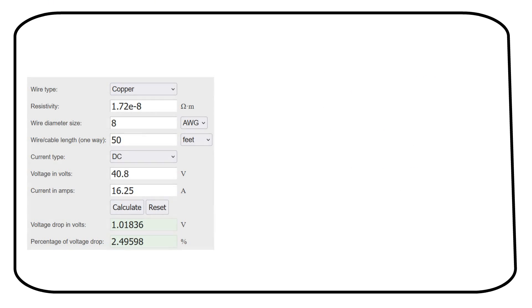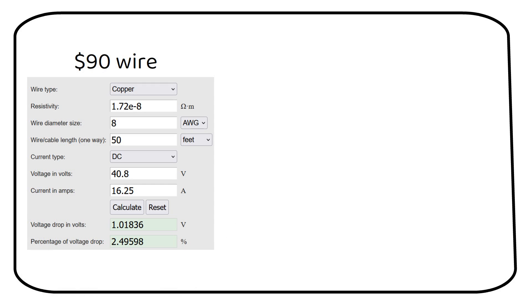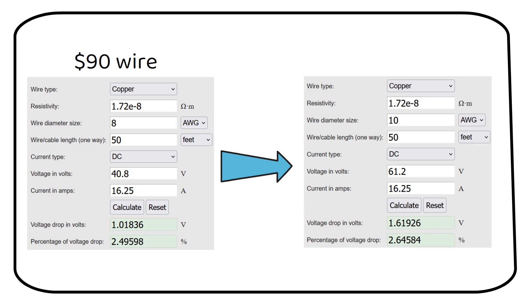For a 50-foot run from the combiner box to the charge controller, we would need an 8 gauge or 10 millimeter square wire, as you can see in the following voltage drop calculation. However, 8 gauge wire is costly, coming in at $90. To reduce expenses, consider adding another panel for a 3S2P configuration.